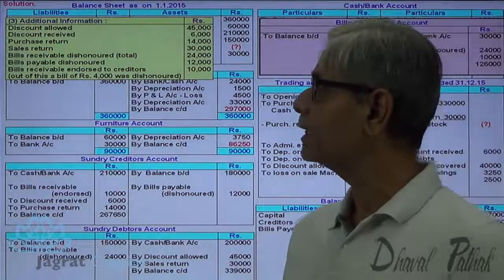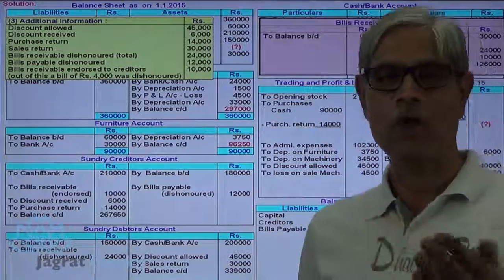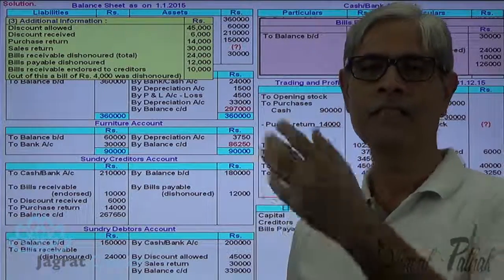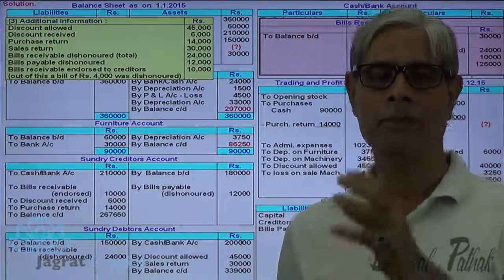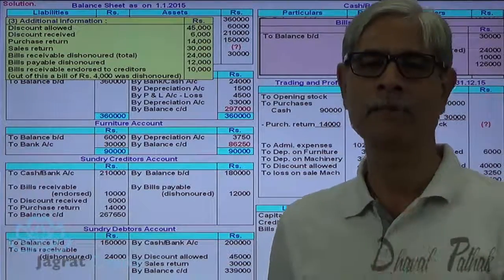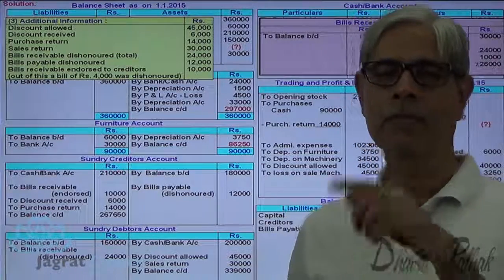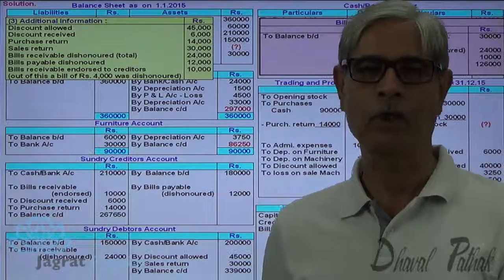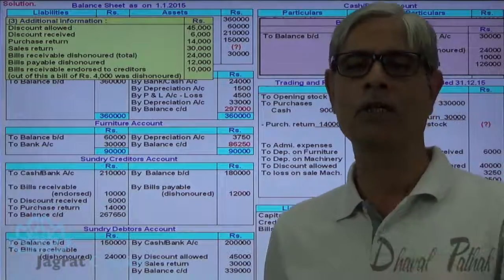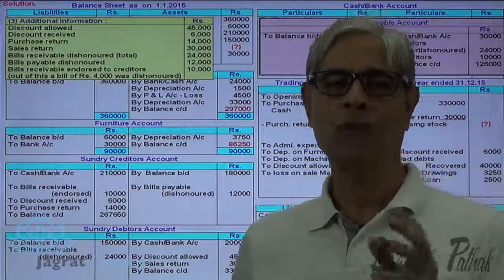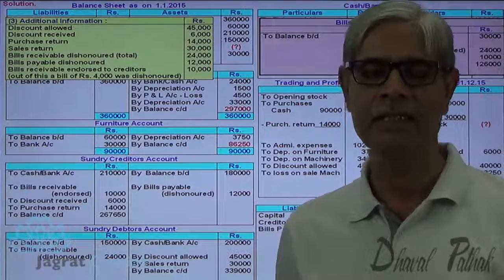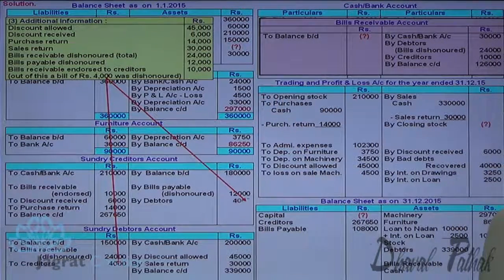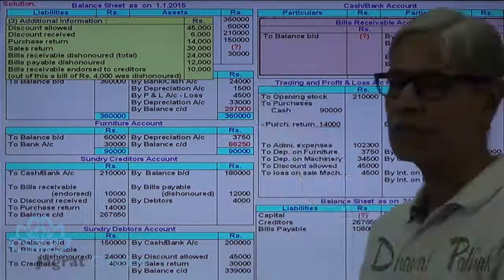Out of bills endorsed to creditors, bills of Rs. 4,000 were dishonored. When an endorsed bill is dishonored, payment to creditors and receipt from customers both do not occur. As a result, debtors balance increases and creditors balance also increases. The journal entry for endorsed bill dishonored is: debtors account debit to creditors account credit.